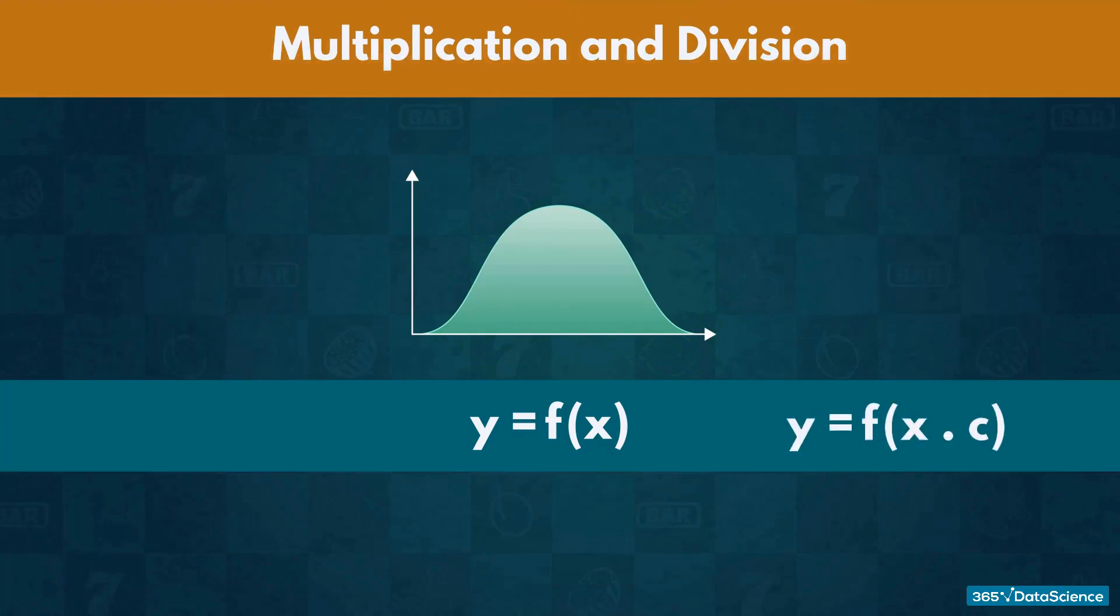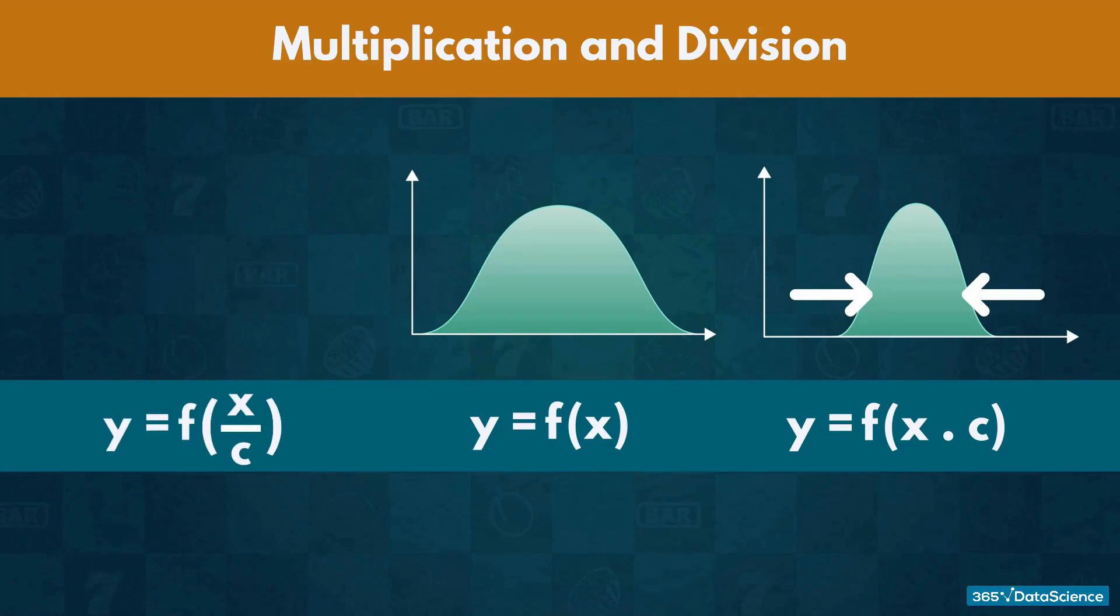If we multiply the function by a constant, it will shrink that many times. And if we divide every element by a number, the graph would expand.